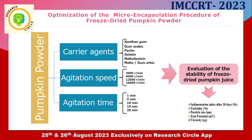We also used different kinds of agitation speed and agitation time from 1 minute to 20 minutes. After that, we obtained the pumpkin juice with the freeze-dried powder and we evaluated the stability of this product. The evaluation was given by some tests like the sedimentation index, turbidity, particle size, zeta potential, and viscosity.